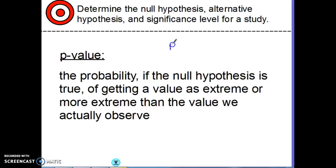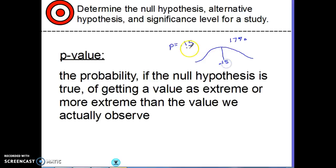In the study with the internet company, if the null hypothesis is true, P equals 0.15. But on that one day, they got 17% of people buying things. Thinking about a normal distribution — if the null hypothesis is true, the mean would be 0.15, and we're looking for the probability of getting 17% or something more extreme. That probability gives a good idea of how far 17% is from 15% in context, and it is the deciding factor between the null hypothesis and the alternative. We'll be calculating P-values to help us decide.